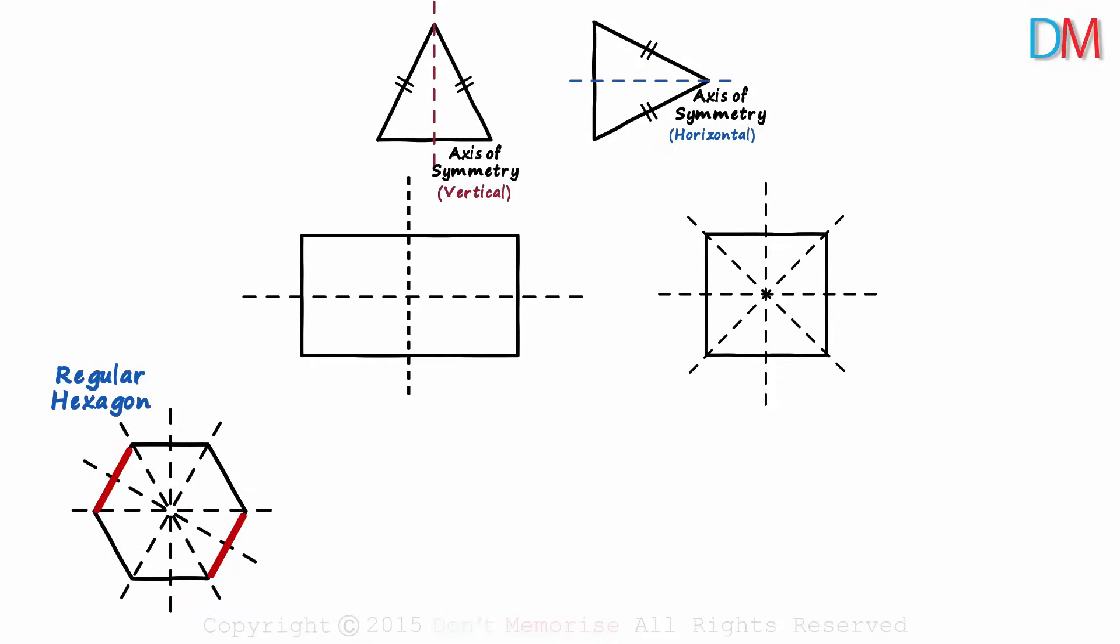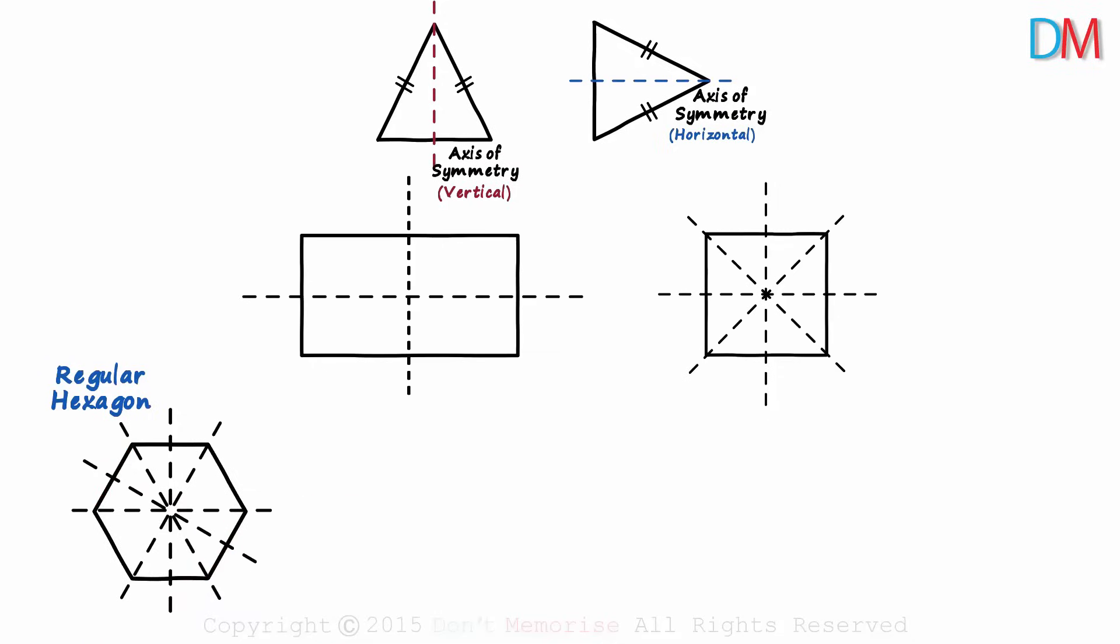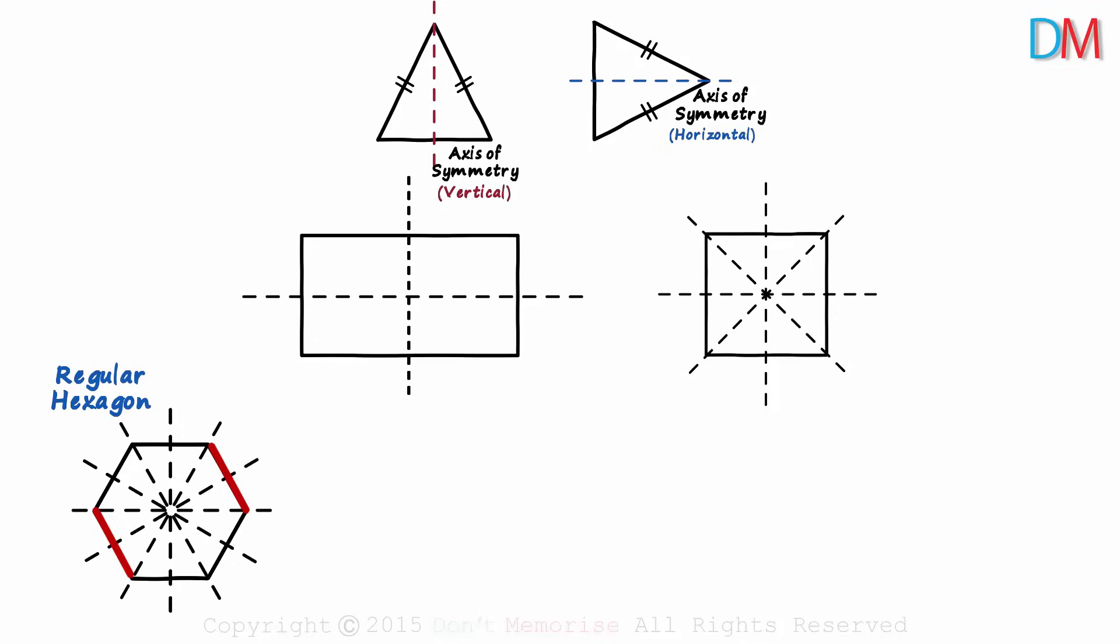The line joining the midpoints of these two sides, and the line joining the midpoints of these two sides will also be the axis of symmetry. Folding the figure along any of the lines will give us matching parts. Six in all.